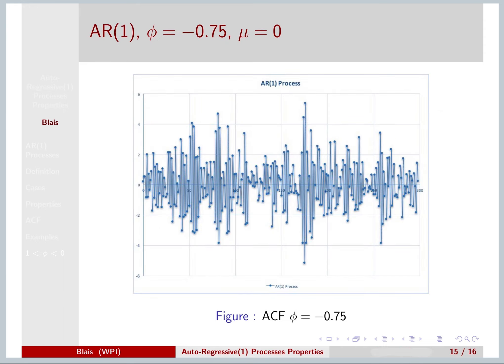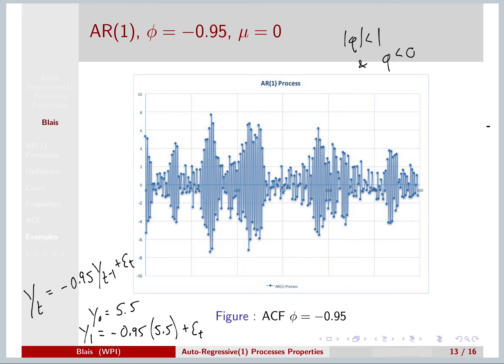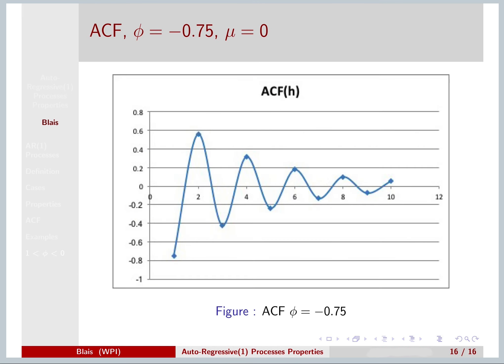We can look at another example where you have the memory parameter being a little bit smaller, but still negative, smaller in the absolute value, so negative 0.75. And you see a similar kind of structure, but it's looking noisier than what we had in the negative 0.95 case. And you see a similar ACF, but notice it's decaying to zero much more quickly. The ACF at the negative 0.95 level at lag 1 was much closer to minus 1.